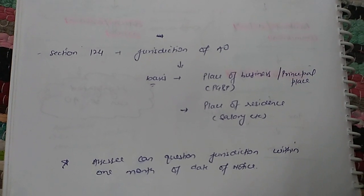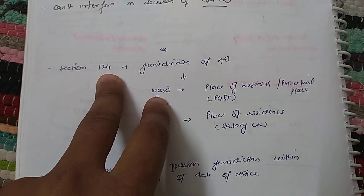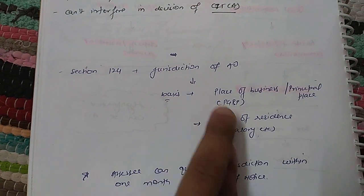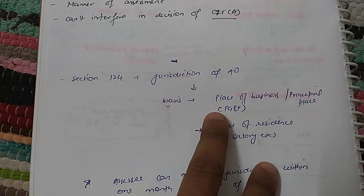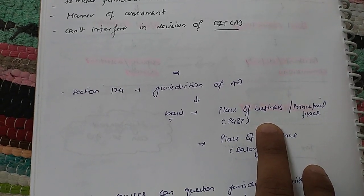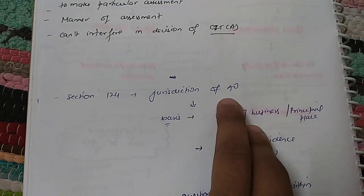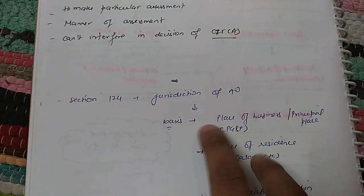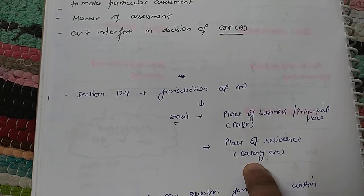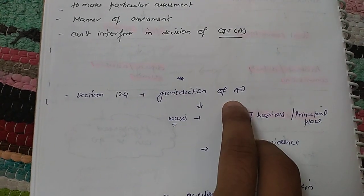Now let's discuss the jurisdiction of the Assessing Officer. This is covered under Section 124, which deals with the jurisdiction of the Assessing Officer. If a person has income under Profits and Gains of Business or Profession (PGBP), then the place of business — or if the person has multiple offices in different jurisdictions, the principal place of business — shall be the defining factor for the AO's jurisdiction. However, if the taxpayer is a salaried person, then the place of residence is the basis for defining the jurisdiction of the Assessing Officer.